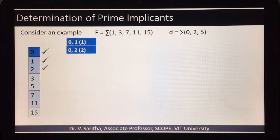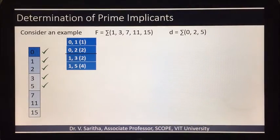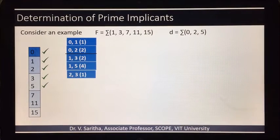Then we'll compare second and third groups. 1 and 3 difference 2. 1 and 5 difference 4. 2 and 3 difference is 1. 2 and 5 is not possible, so separation goes there.